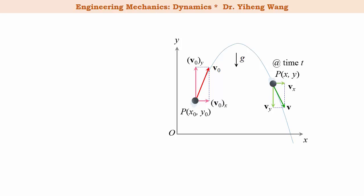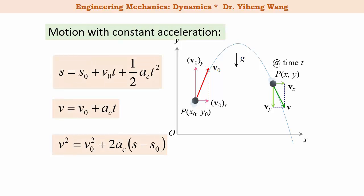As already mentioned, there is only a constant acceleration g in the negative y direction, and no acceleration in the horizontal direction. Therefore, along the vertical and horizontal directions respectively, the equations of rectilinear motion with constant acceleration apply.